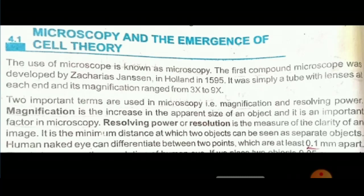The two important terms used in microscopy are magnification and resolution. What is magnification? Magnification is the increase in the apparent size of an object, or we can say it is the ability of an optical instrument to make an object bigger. It is usually expressed by a whole number with the letter x — for example, 3x means the image has been magnified three times.